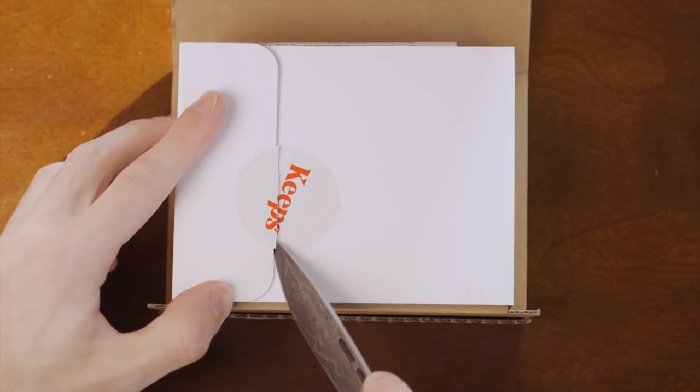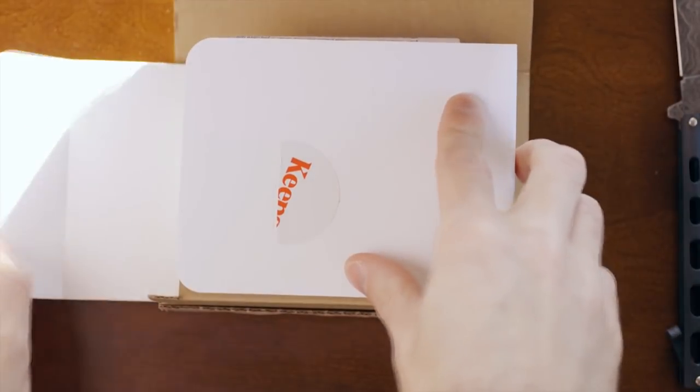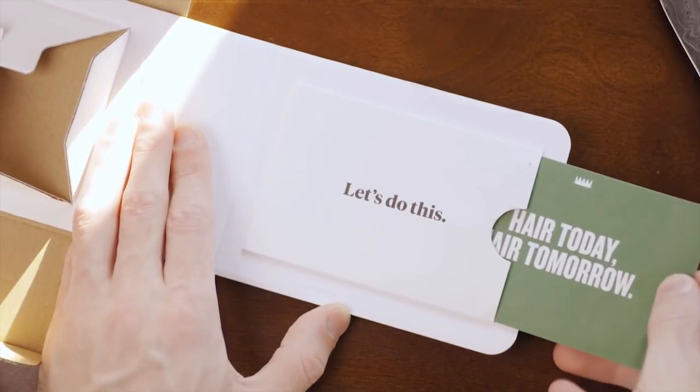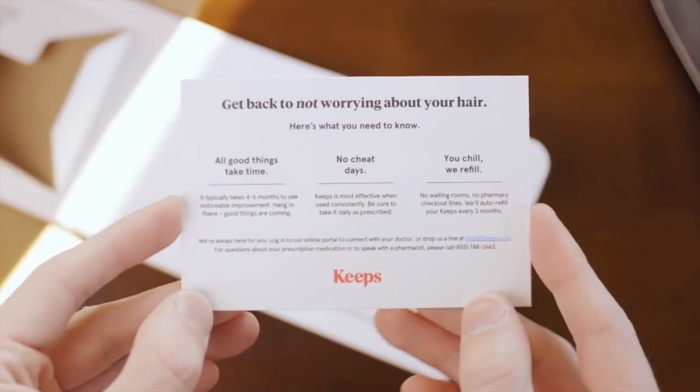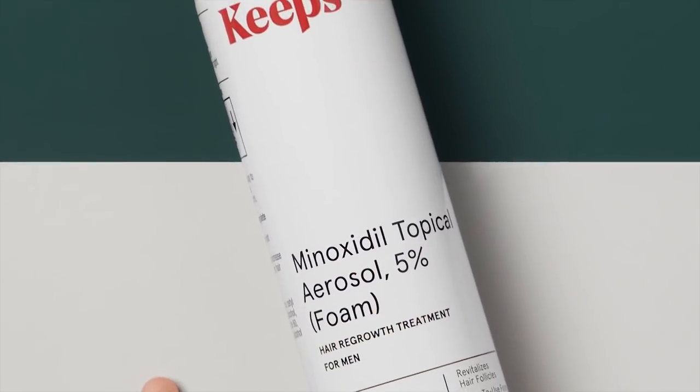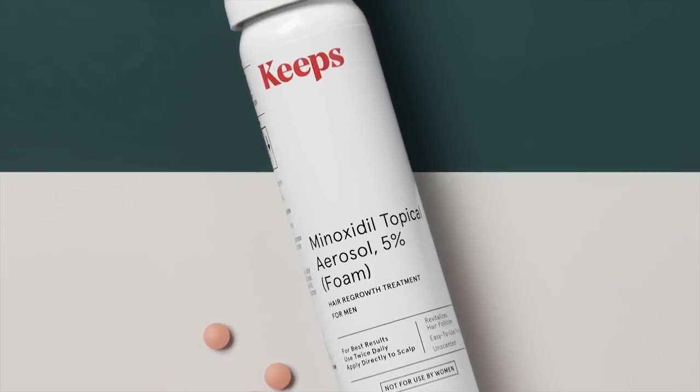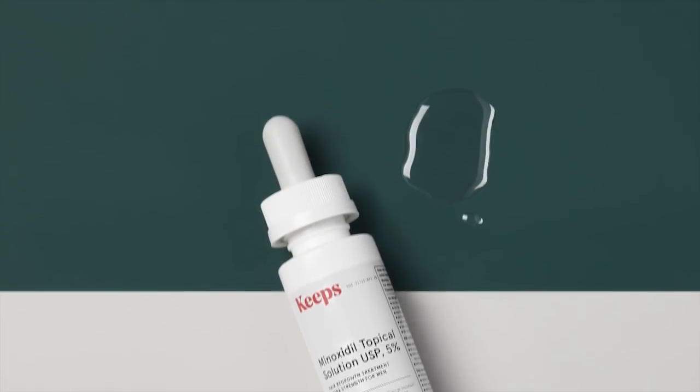Keeps has licensed doctors that will review your information online and then recommend the hair loss treatment that's right for you. You don't even need to leave your house, because your FDA-approved medications will be shipped to your door every 3 months. And you can message your Keeps doctor 24-7 with any questions or concerns.